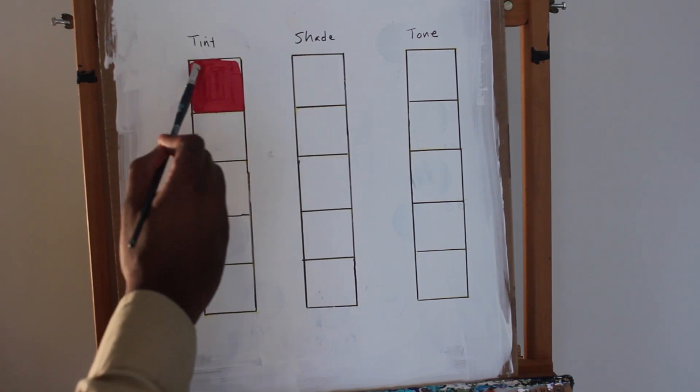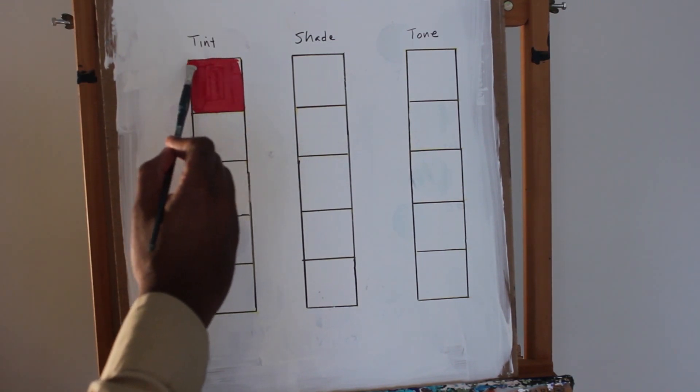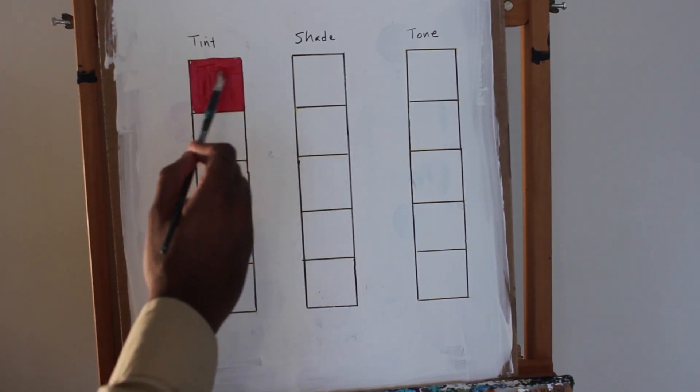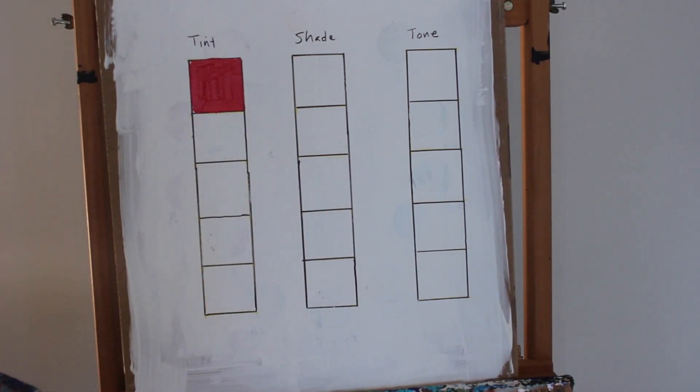The color I'm using for this lesson is red. I'm going to paint in my first square. You have about five squares. I could do more squares just to show variation. It's kind of like a value scale if you've ever done a value scale when you're drawing.